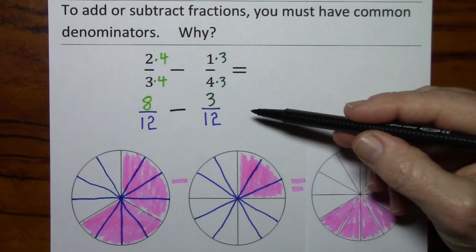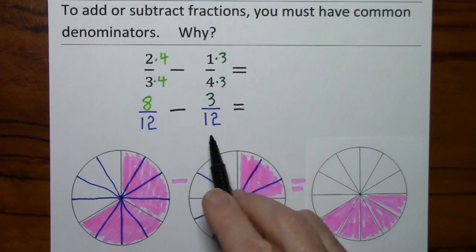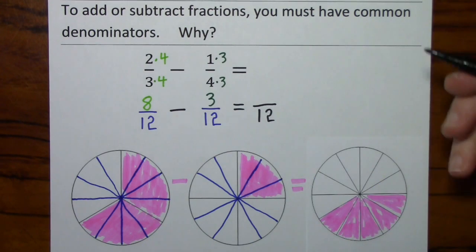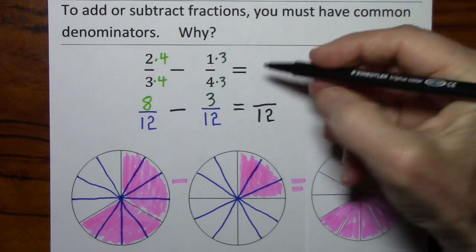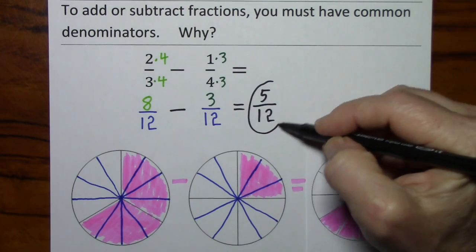And mathematically, we went through all the trouble of getting common denominators because we're going to keep that denominator. And then it's 8 minus 3 is 5. Thank you.